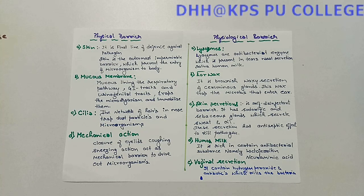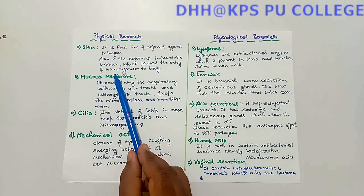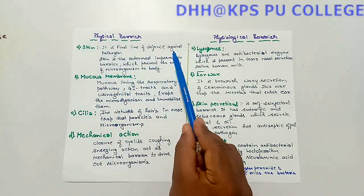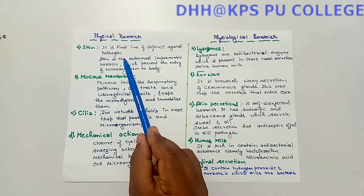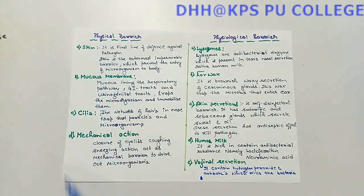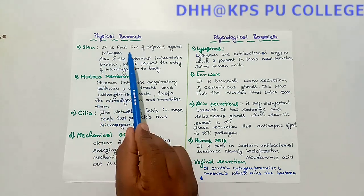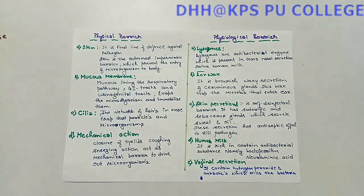Skin covers the body and is the outermost impermeable barrier which prevents the entry of microorganisms. Hence, skin is the first line of defense mechanism against pathogens.